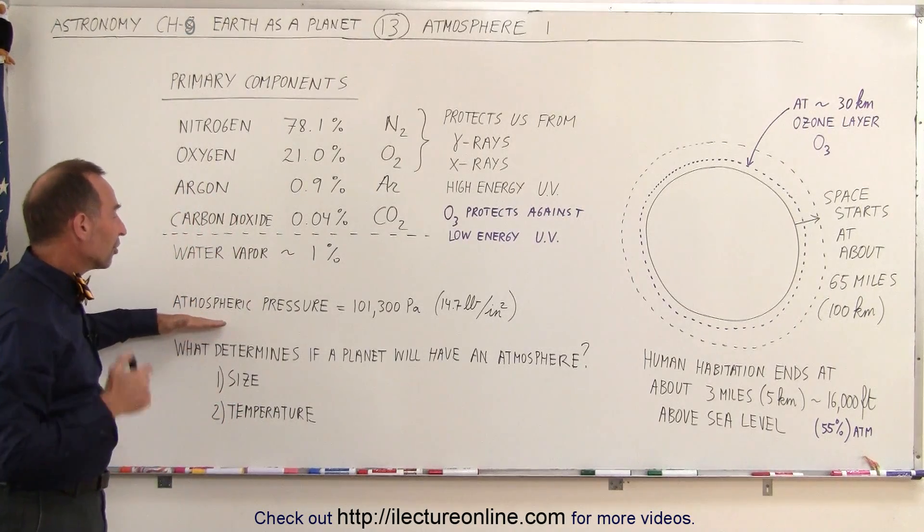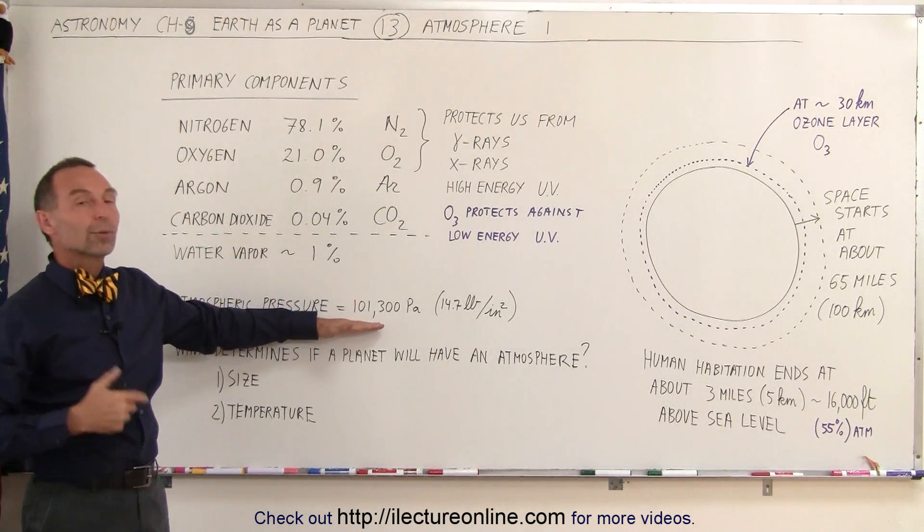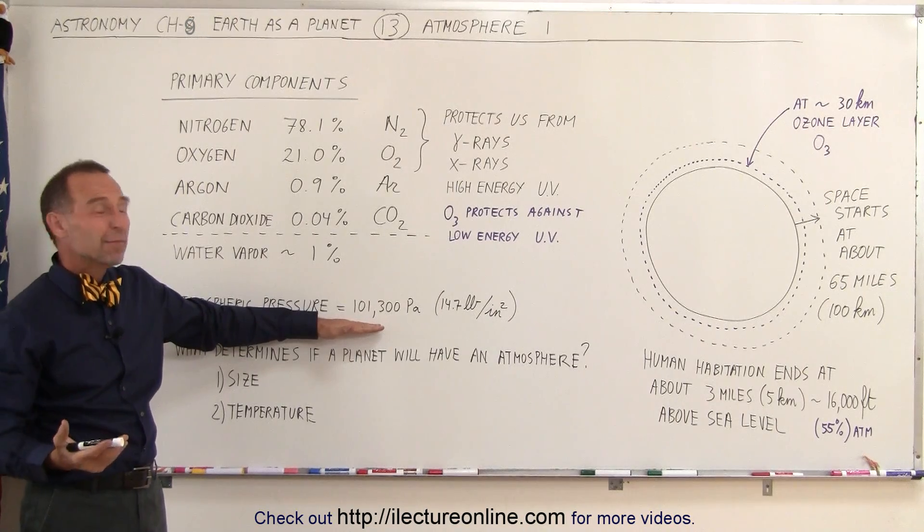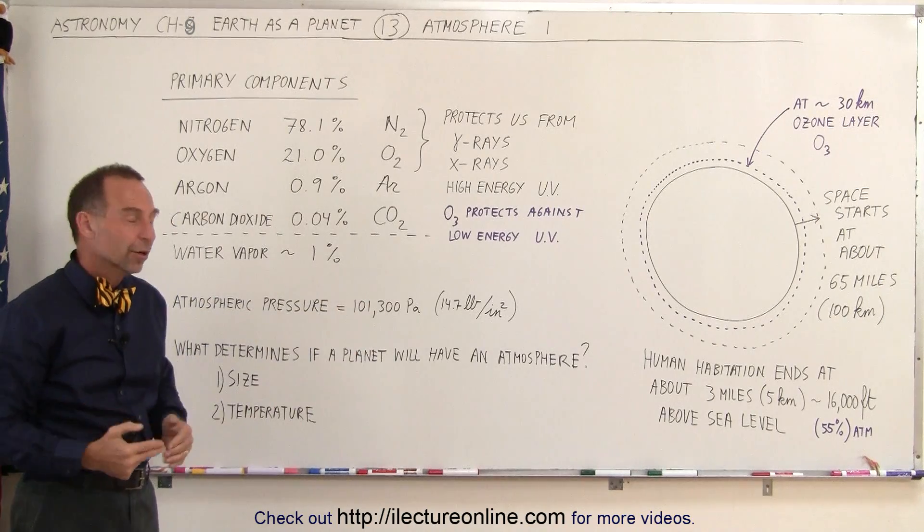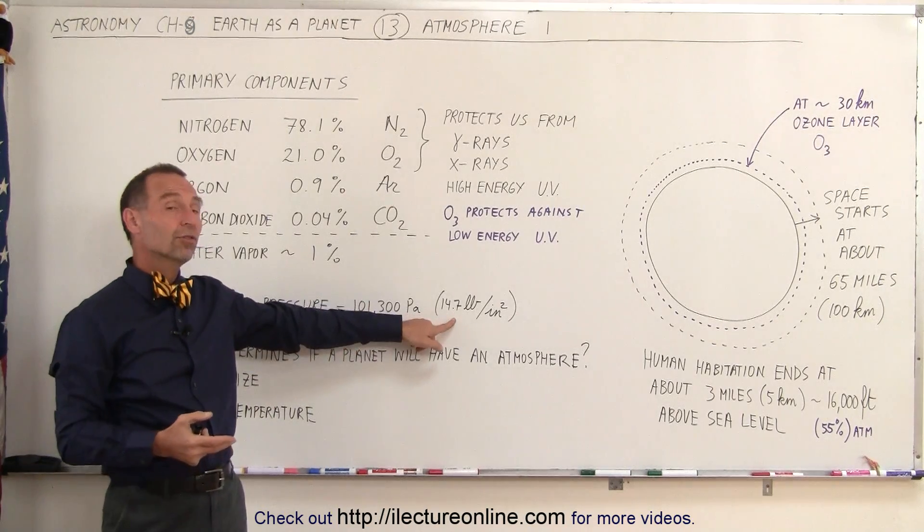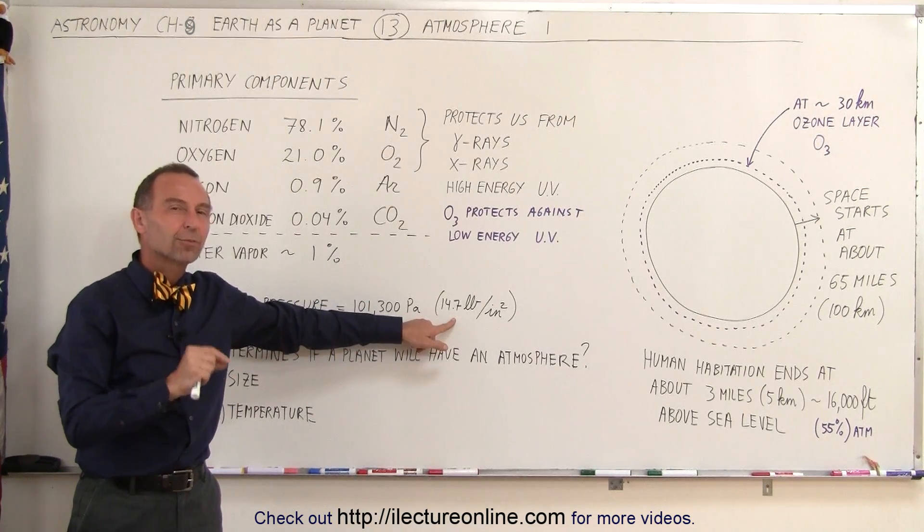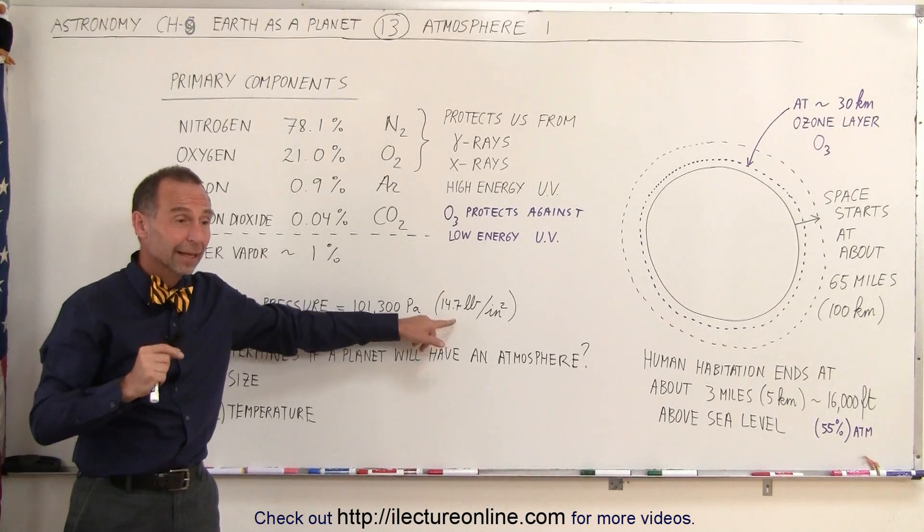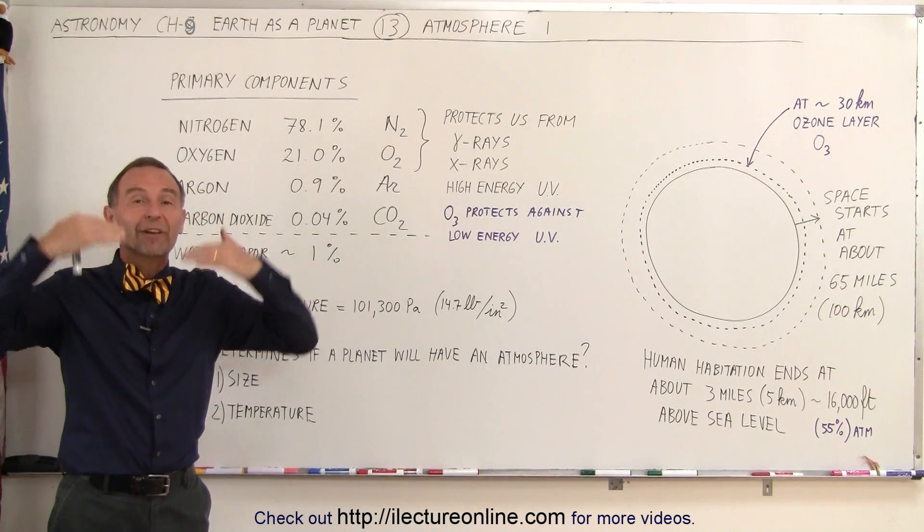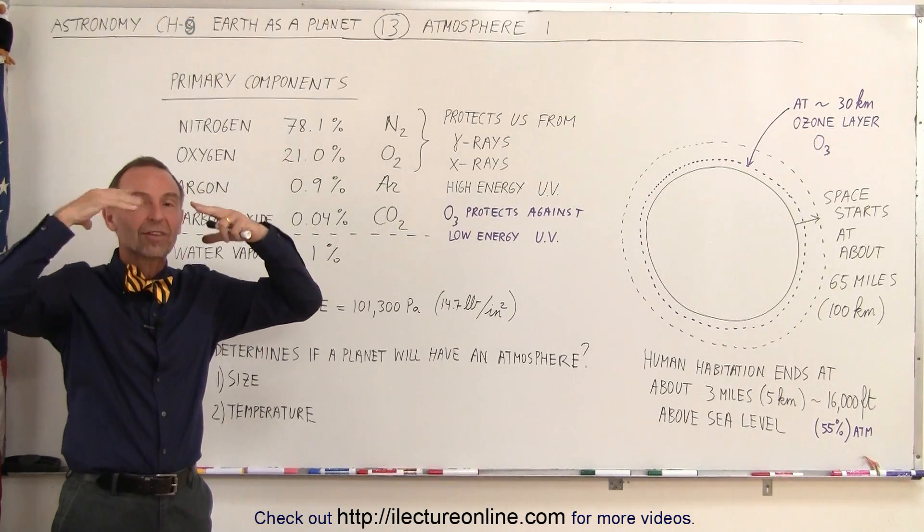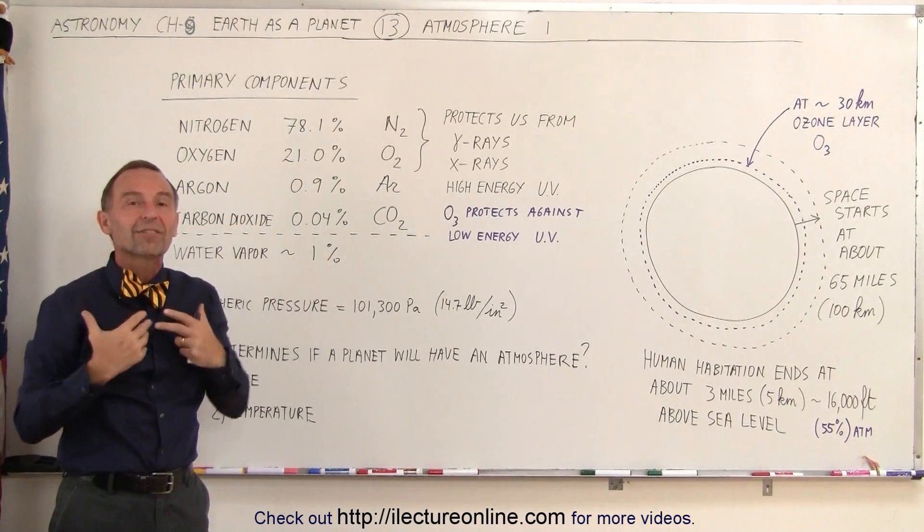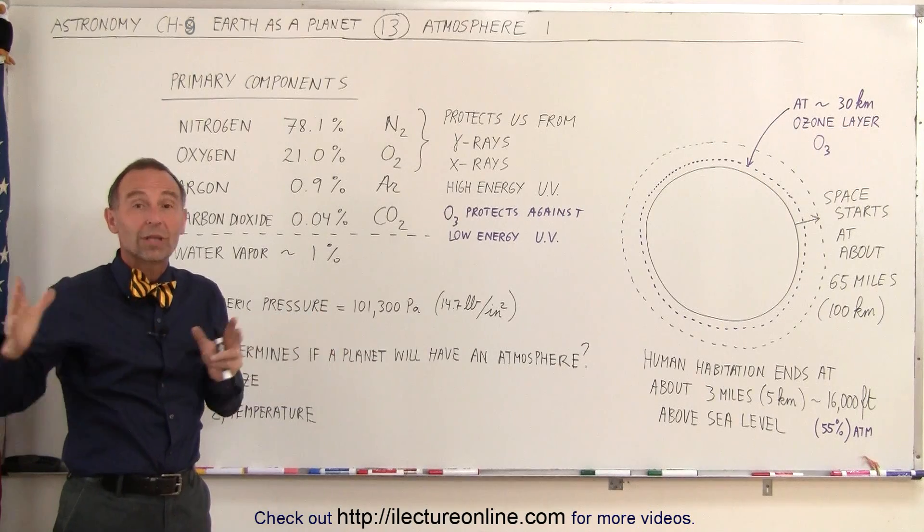The atmospheric pressure on the Earth is 101,300 pascals. What does that really mean? It means 101,300 newtons of pressure for every square meter. Converted to pounds per square inch, it's 14.7 pounds per square inch. That's actually quite a bit, and the reason why we don't seem to be affected by it is because our bodies, not only does the pressure act from the outside.